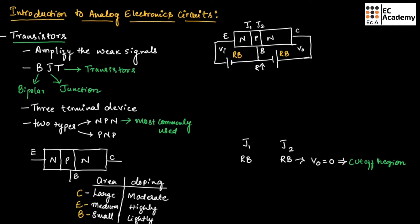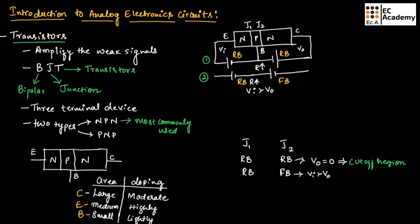When we connect reverse bias across Junction J1 and forward bias across Junction J2, due to the reverse bias condition of J1, resistance will be very high and we get less output voltage. In this second case, input voltage will be greater than output voltage. This condition is known as attenuation, which means we have a high input voltage but very low output voltage.